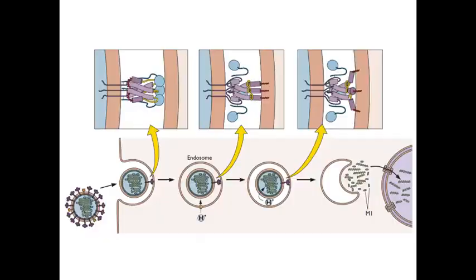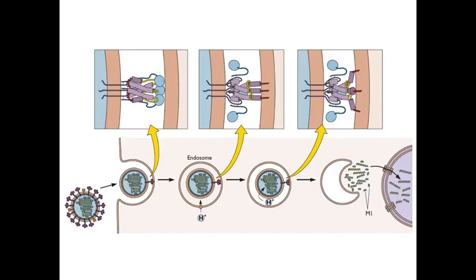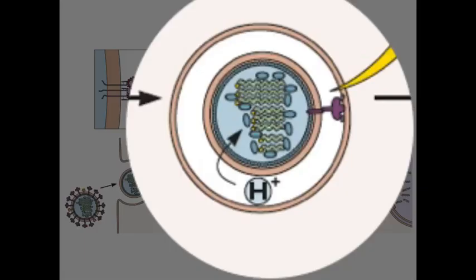As this is happening, there are protons being pumped into the interior of the endosome. The virus also has a channel in its membrane, the M2 ion channel, which we talked about last time. And the function of that occurs right at this step. These protons that are pumped in by the endosomal pumps then flow through the M2 ion channel and enter the interior of the virion.